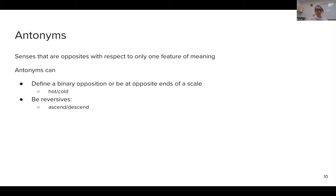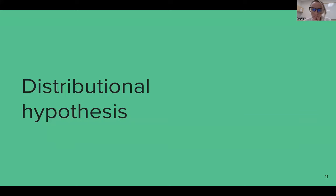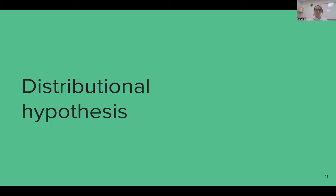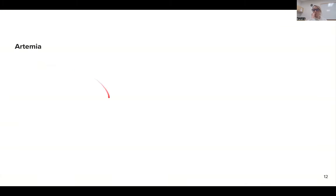Any questions about this so far? Just have in mind that these are terms you should be aware of: antonym, synonym, word similarity, word relatedness. Now let's move on to a linguistic piece we'll use to build these kinds of representations. The linguistic insight we are going to use is called the distributional hypothesis. I'll explain it with an example. Can I get a raise of hands from everyone who knows what 'artemia' is? I don't expect many hands.